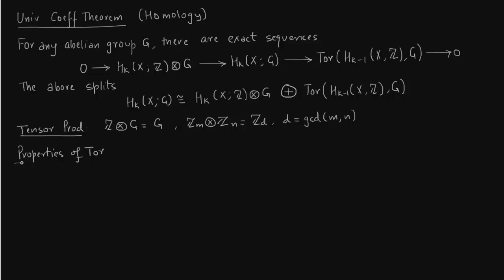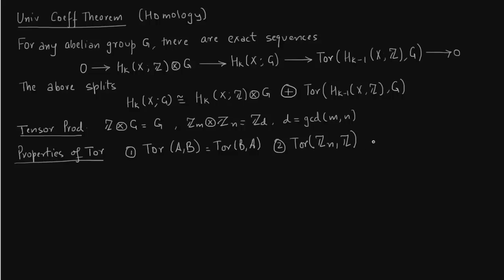Now for the properties of Tor — again we are not defining what Tor is, just the properties needed for computation. First: Tor(A, B) equals Tor(B, A). An important consequence is Tor(0, B) = 0. Also, Tor(Z_n, Z_m) = Z_d, where d is the greatest common divisor of m and n.